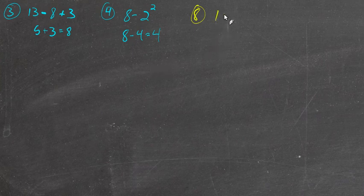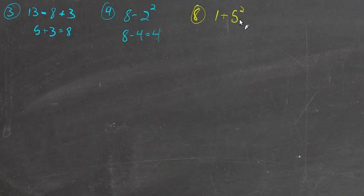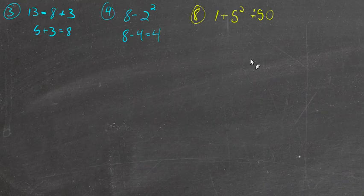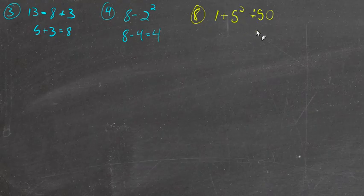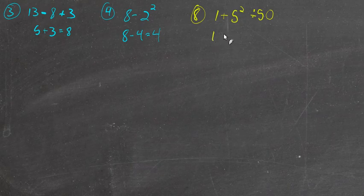Number 8: 1 plus 5 squared, divided by 50. Okay. Well, should I divide 5 by 50 and then square that? Well, no, because this isn't really just 5. This is actually 2 factors of 5 multiplied together, so we should write what that is, right?